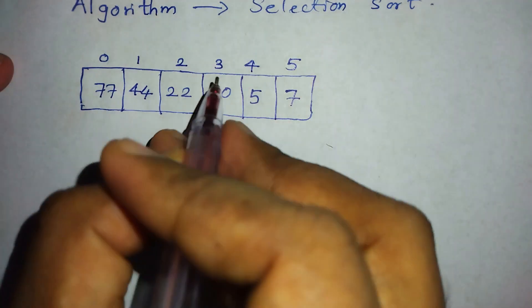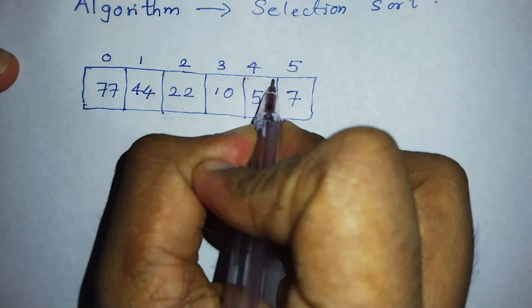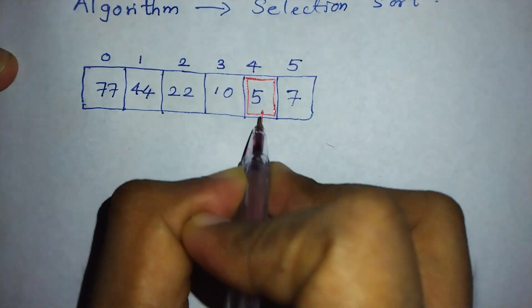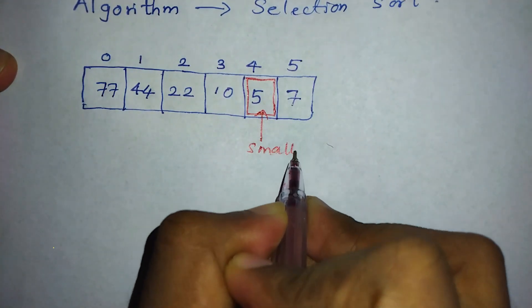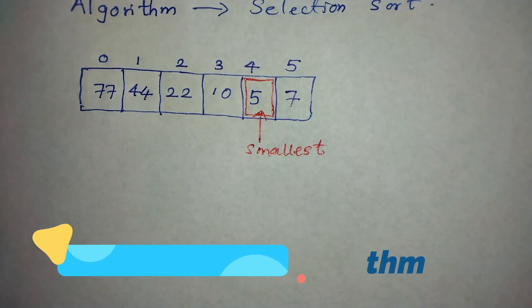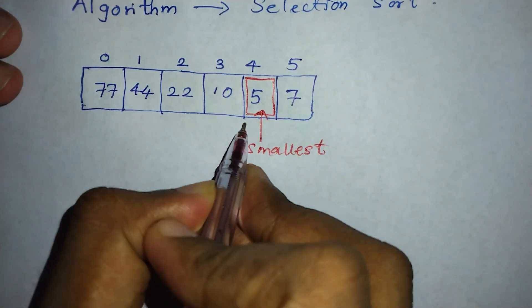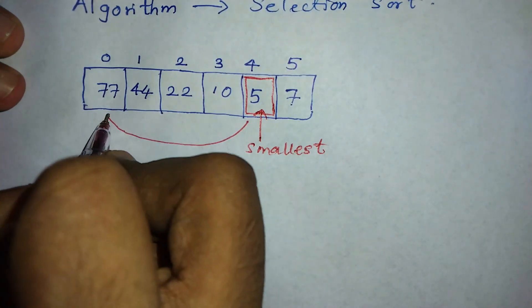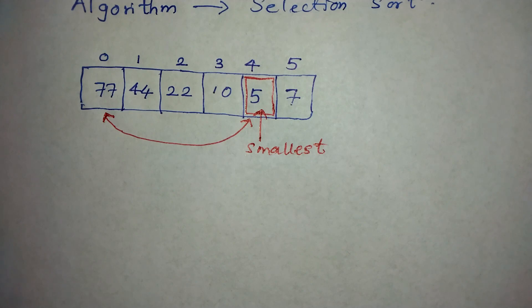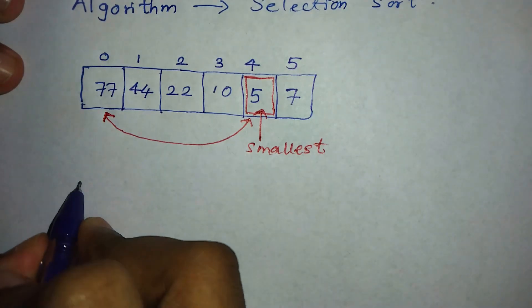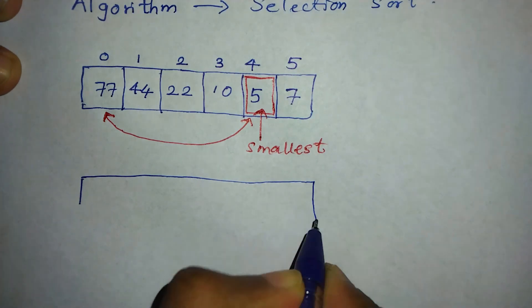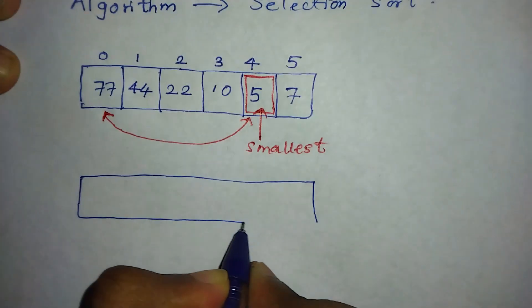First we have to find out the smallest element of the array. Here the smallest one is 5, so we have to swap number 5 and 77. In each iteration we have to swap the smallest number with the first element of the array, so each and every time the left side of the array will be the sorted array and the right side will be the unsorted array.